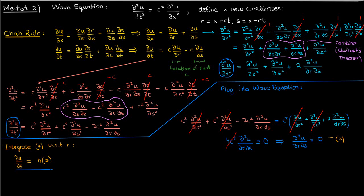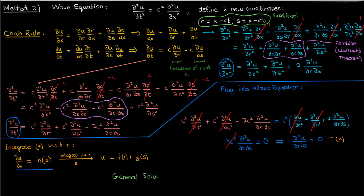Now let's integrate this expression with respect to s, and finally end up with our general solution for u. When we integrate h of s, we end up with its antiderivative that I'm going to just call g. We'll also have a constant of integration, but instead of just being a constant number, we'll have a constant function f of r. And finally, we'll replace the r and the s by x and t using these definitions of r and s, to get the general solution u of the wave equation as a function of x and t, which is just going to be f of x plus ct, plus g of x minus ct.